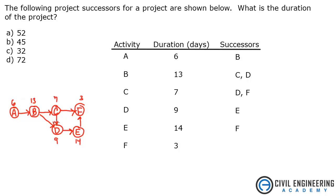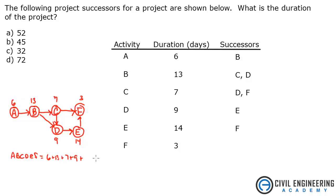What we need to do is look at all the different paths and find out which one is the longest, because that will give us the total duration of the project. Looking at the longest path here, it's A, B, C, D, E, F — which is 6 plus 13 plus 7 plus 9 plus 14 plus 3.